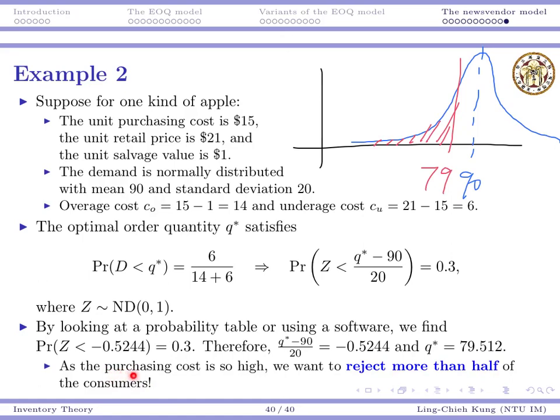But why do we see that? It's because the purchasing cost is too high. The cost is 15 and then the sales margin is just $6. So that means you really need to worry about overage. Once you have one unit left, it's a huge cost for you. So that's why you order fewer.